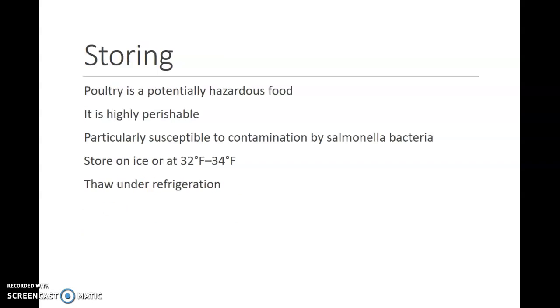In storing poultry, it is important to make sure that you are taking the right steps. Poultry is a potentially hazardous food item and is highly perishable. It is particularly susceptible to contamination by the salmonella bacteria. The two main poultry items associated with salmonella are chicken and turkey, yet all poultry items have the possibility of carrying it. You want to ensure to store your poultry items at 32 to 34 degrees. Especially with game birds, as you are thawing them, it is crucial that you thaw them under refrigeration and give them the time necessary. This concludes this video. Thank you.